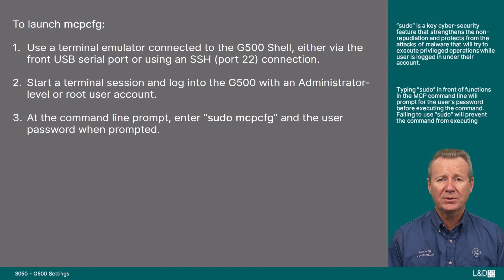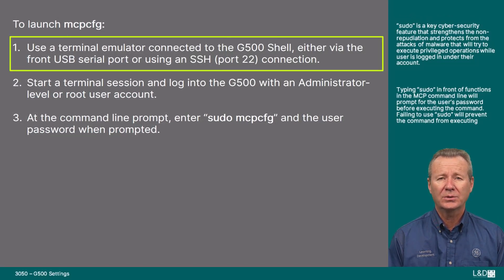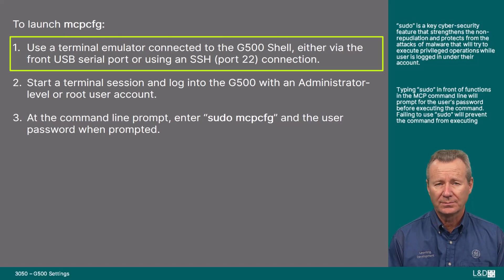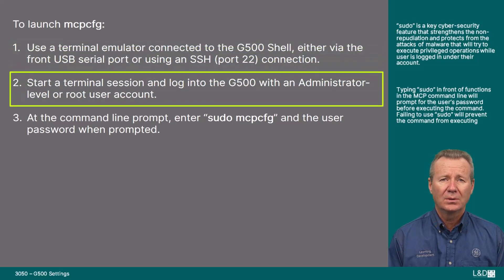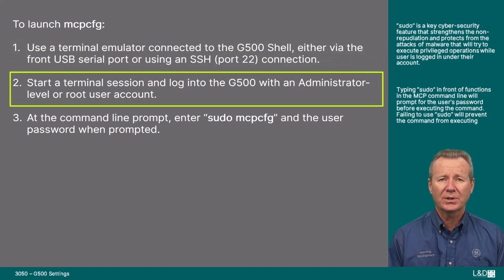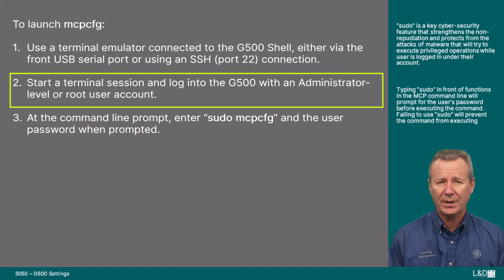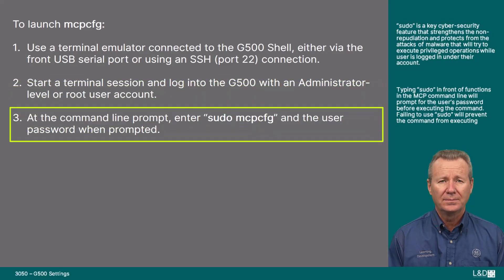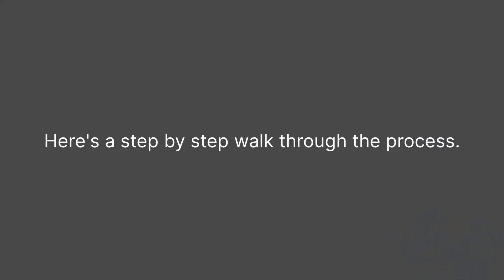To launch the MCP CFG: 1. Use a terminal emulator connected to the G500 shell either via the front USB port or using an SSH port 22 connection. 2. Start a terminal session and log into the G500 with an administrator level or root user account. 3. At the command line prompt, enter sudo mcpcfg and the user password when prompted.